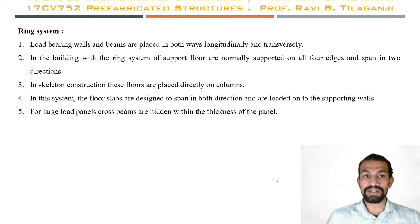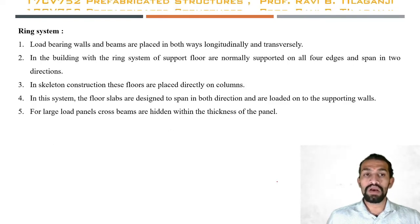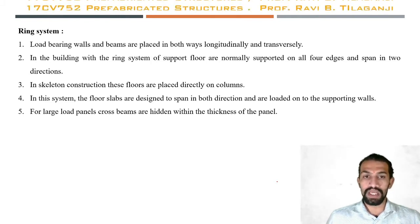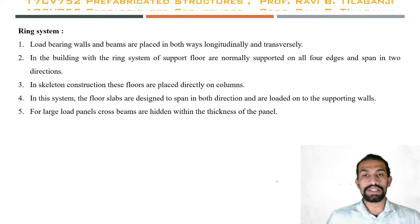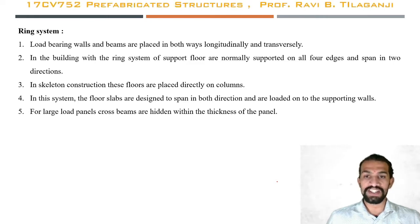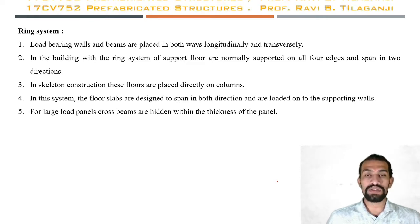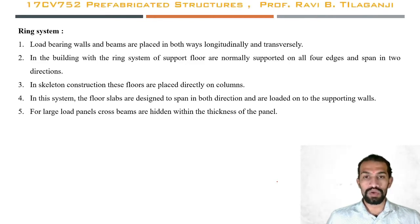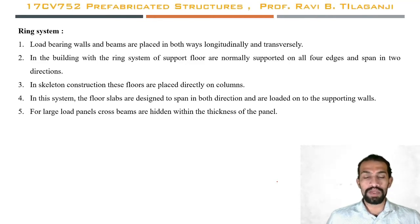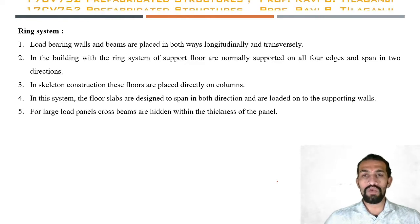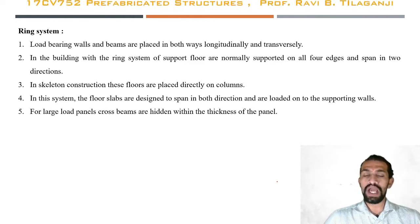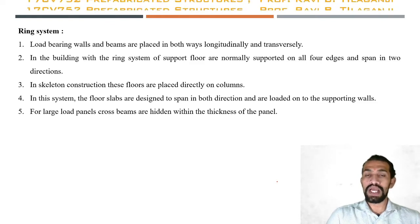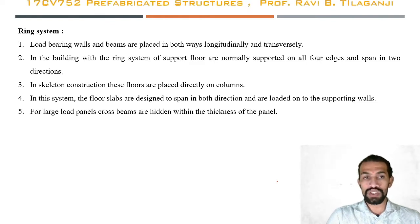In the ring system, load bearing walls and beams are placed in both directions: longitudinally and transversely. They are used in buildings with a ring system of support. Floors are normally supported on all four floor edges and span in two directions, both vertical and horizontal.